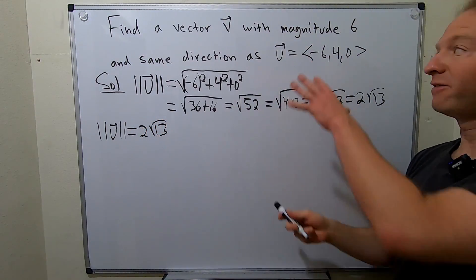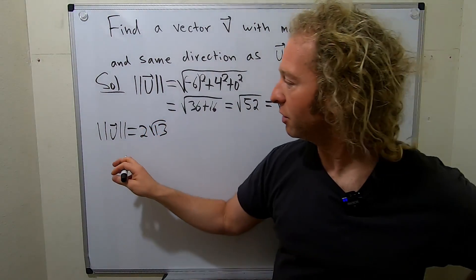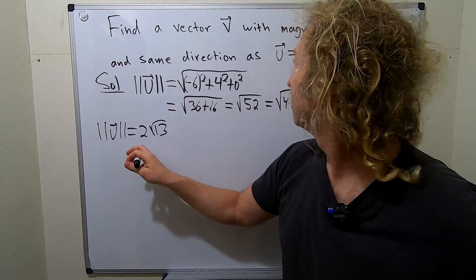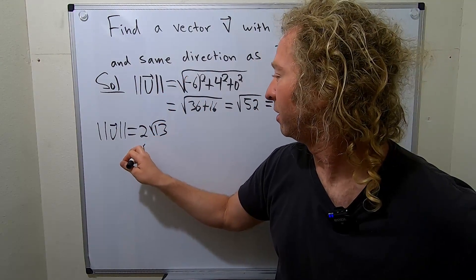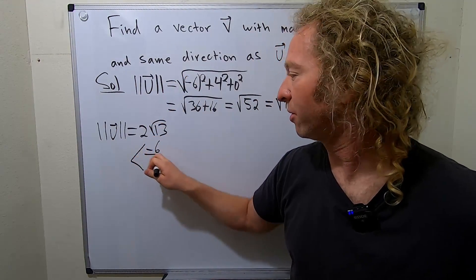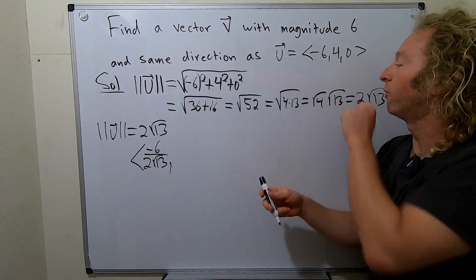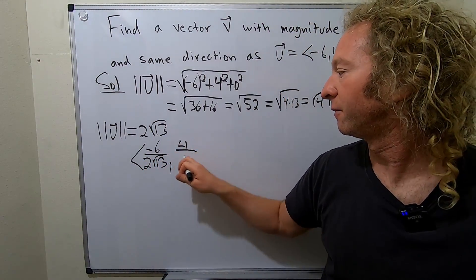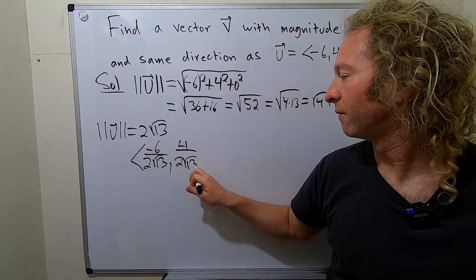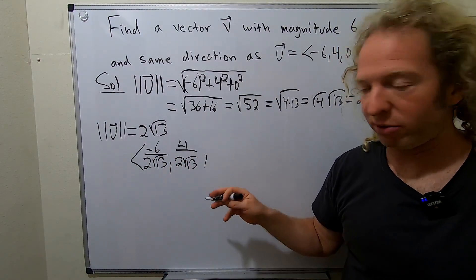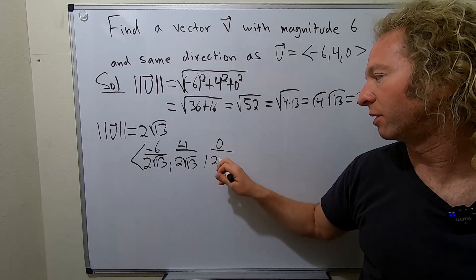So now we just take our vector U here and we divide it by that. So that's going to be our unit vector. So our unit vector will be negative 6 over 2 square root of 13, and then 4 over 2 square root of 13, and then 0 over 2 square root of 13. I'll write it, but it's just going to be 0. We're going to clean it up in a minute.